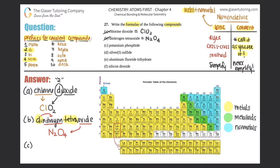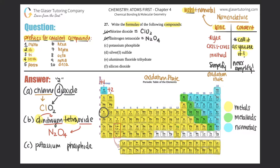C: potassium phosphide. Potassium is K — that's a metal — so I automatically know it's ionic. For ionic compounds we use the crisscross method, which requires oxidation states. The trend is: group 1 is always +1, group 2 is +2, skip the transitions, then +3, and turning over: −4, −3, −2, −1, and zero.